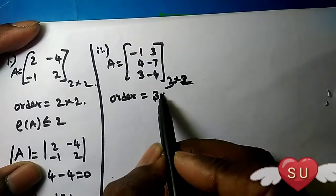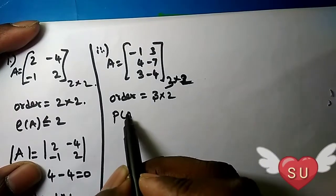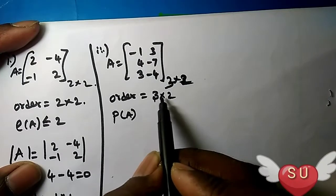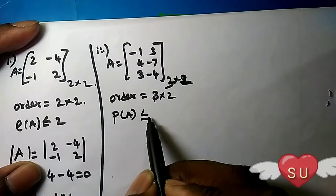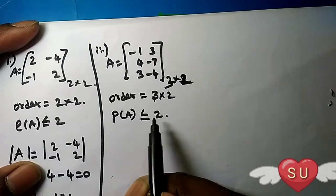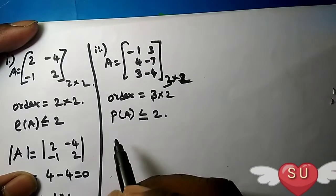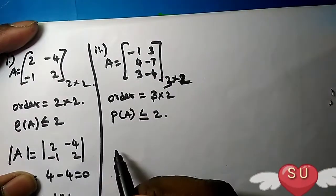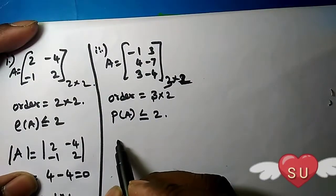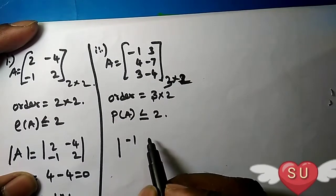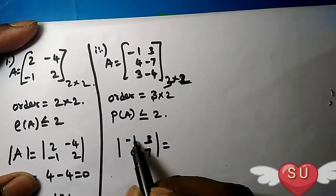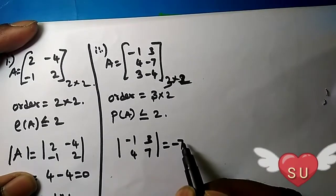So the rank of y is equal to 3 into 2. On this row, rank of y equal to 1. Response 4, 7. The determinant numbers we are going to do: 1, 7, 7, minus 7, 4, 3, 7, 12.